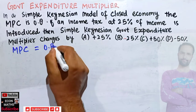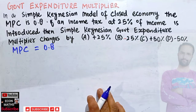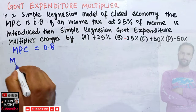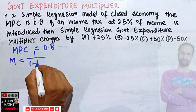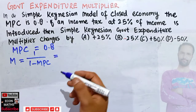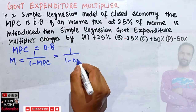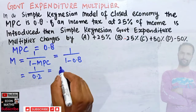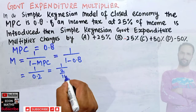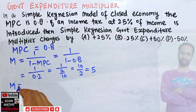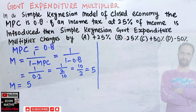We are given that the marginal propensity to consume (MPC) equals 0.8, and it is a closed economy. The formula for the simple Keynesian multiplier is 1 divided by (1 minus MPC). This is our initial multiplier before income tax is introduced. So that is 1 upon (1 minus 0.8), which equals 1/0.2, or 10/2, which comes out to 5. Our initial simple Keynesian multiplier is 5.